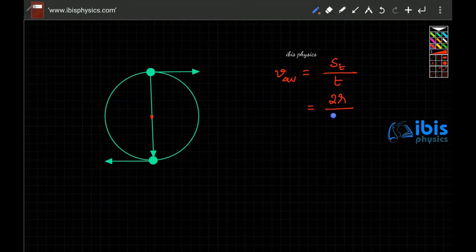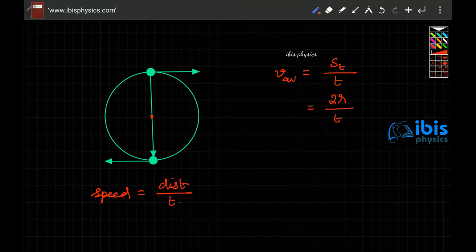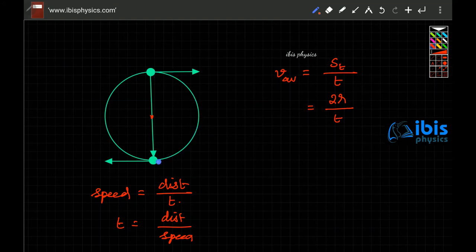Dividing 2r by the time taken for the object to travel from here to here. The object moves with constant speed v. Speed is equal to total distance divided by time taken. For half a rotation, the distance covered is equal to π r, so the time taken is π r divided by v — note here it is speed, not velocity.